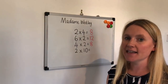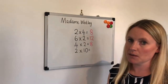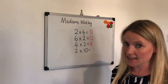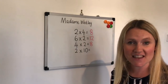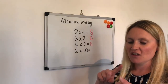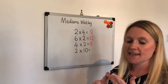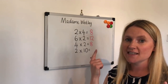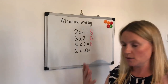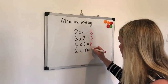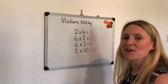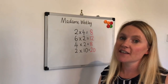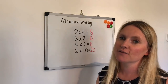Finally, we're going to look at 2 multiplied by 10, which is the same as doubling 10 if you know the answer to that. Let's count in our twos ten times: 2, 4, 6, 8, 10, 12, 14, 16, 18, 20. Well done everybody — you've done really well today. Thank you for listening to another episode of Madame Wesley.